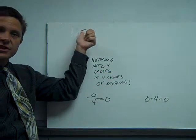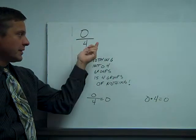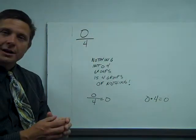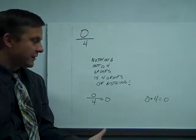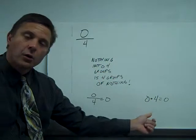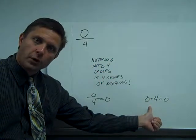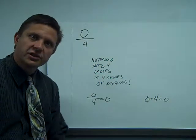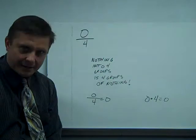So what's zero divided by four? Well, we take nothing and we break it into four groups. Four groups of nothing is nothing. Or again, the inverse: zero times four is zero. And that works fine.